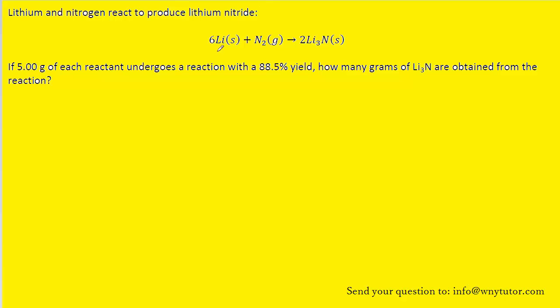What we need to do first is decide which of the two reactants is going to be the limiting reagent. One way to do this is to simply calculate how much product we could expect based on the given amount of each reactant.